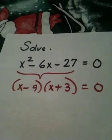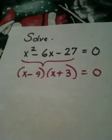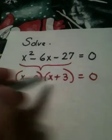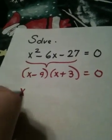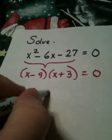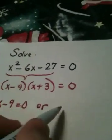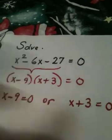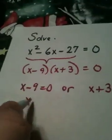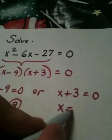Let's not make work for ourselves. If something factors, factor it. Look how quick this is. x minus 9 is equal to 0, or x plus 3 is equal to 0. In this case, x is 9, and in this case, x is negative 3.